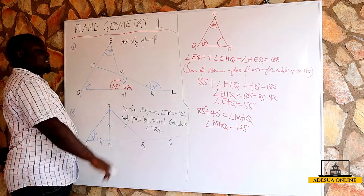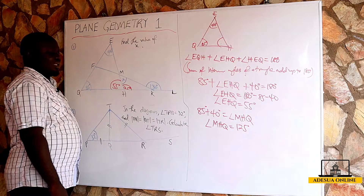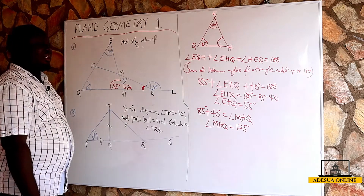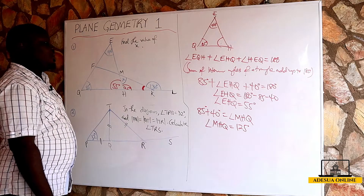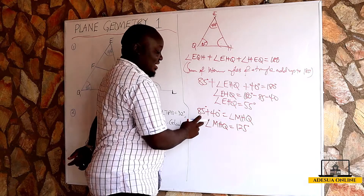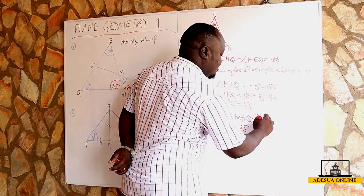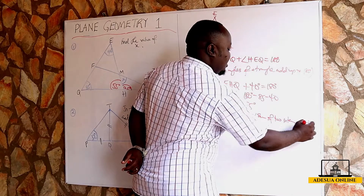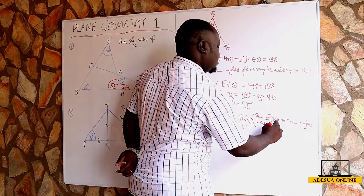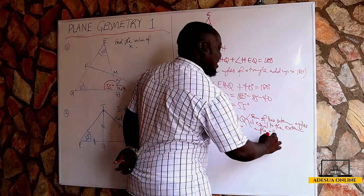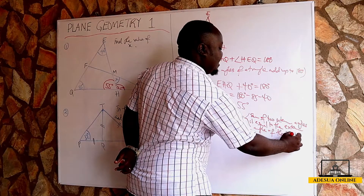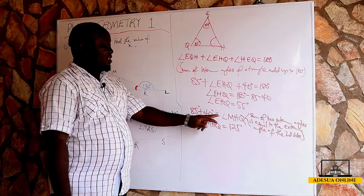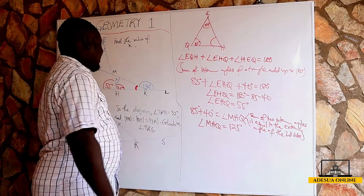Now we know MHQ is 125 degrees. What supports this is: the sum of two interior angles is equal to the exterior angle of the third side. So 85 plus 40 equals MHQ, which is 125 degrees.